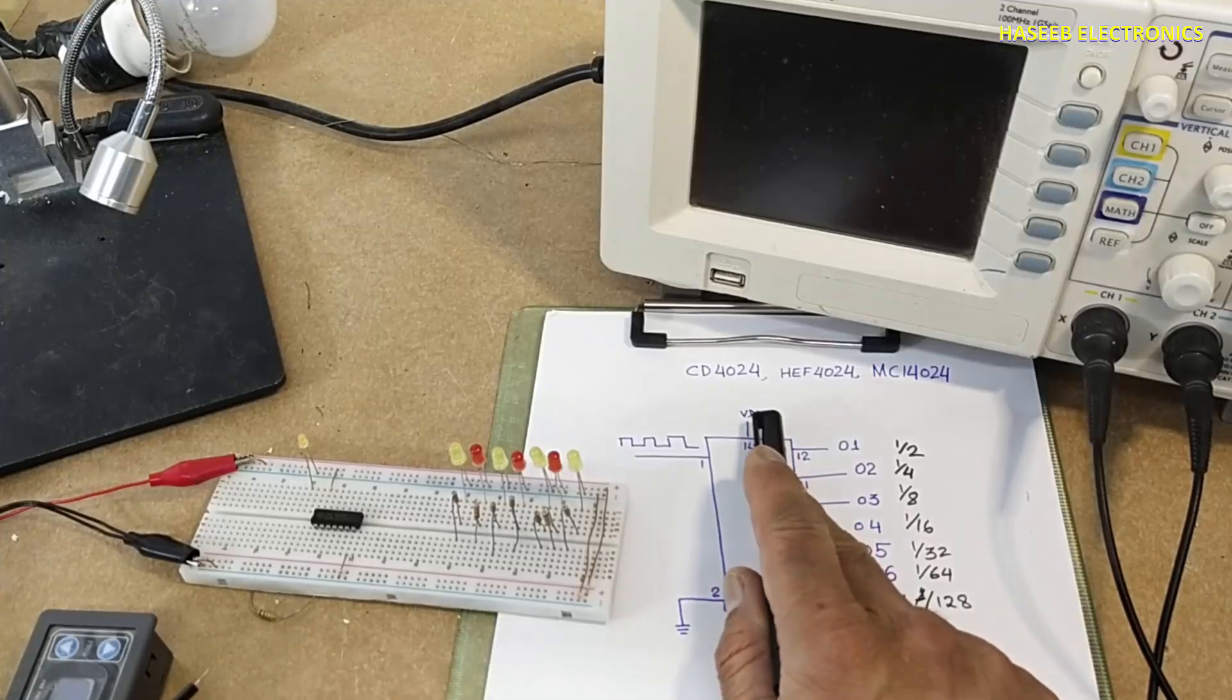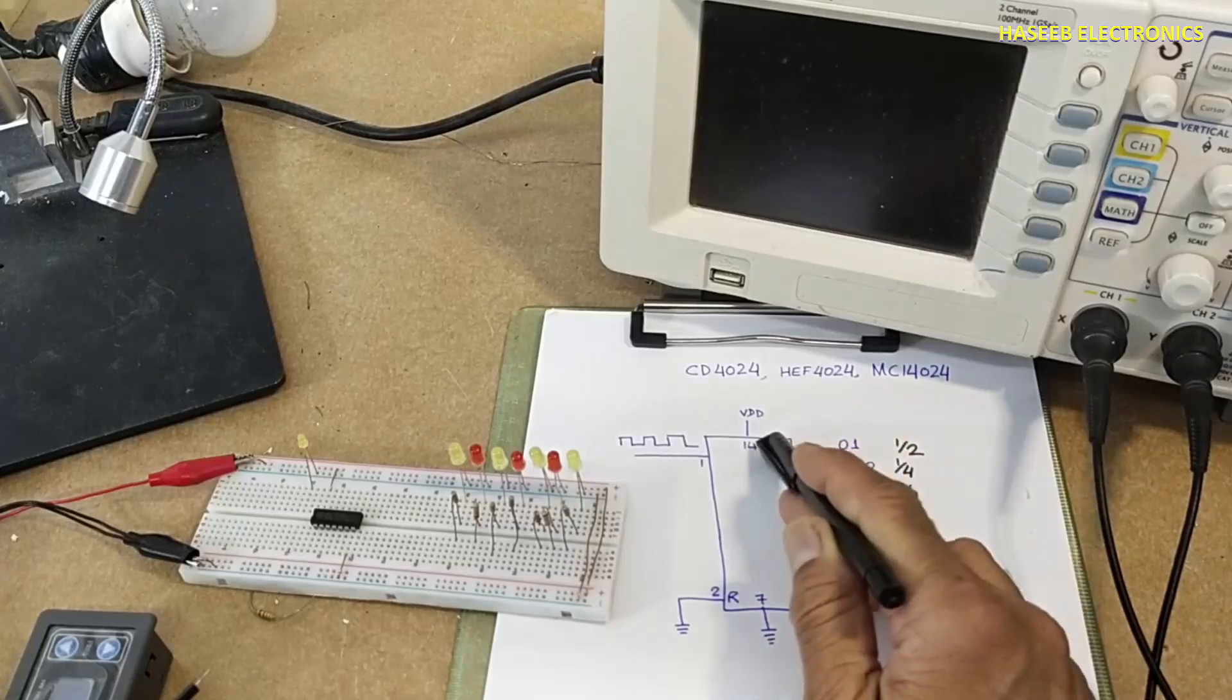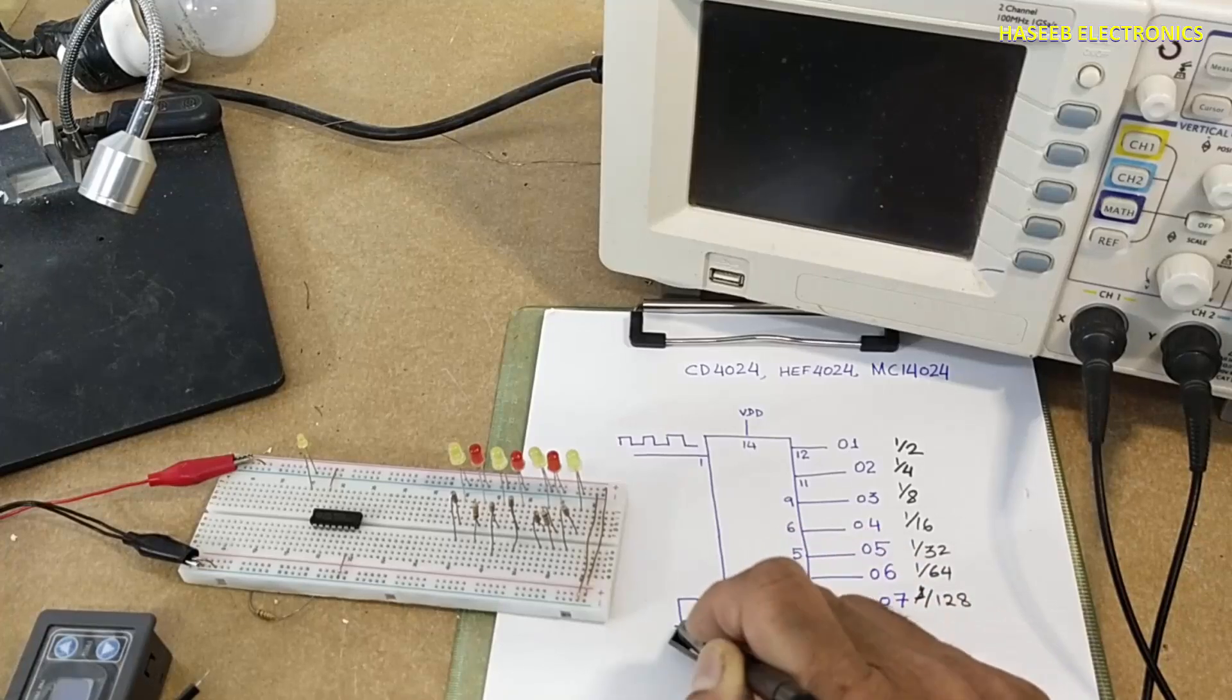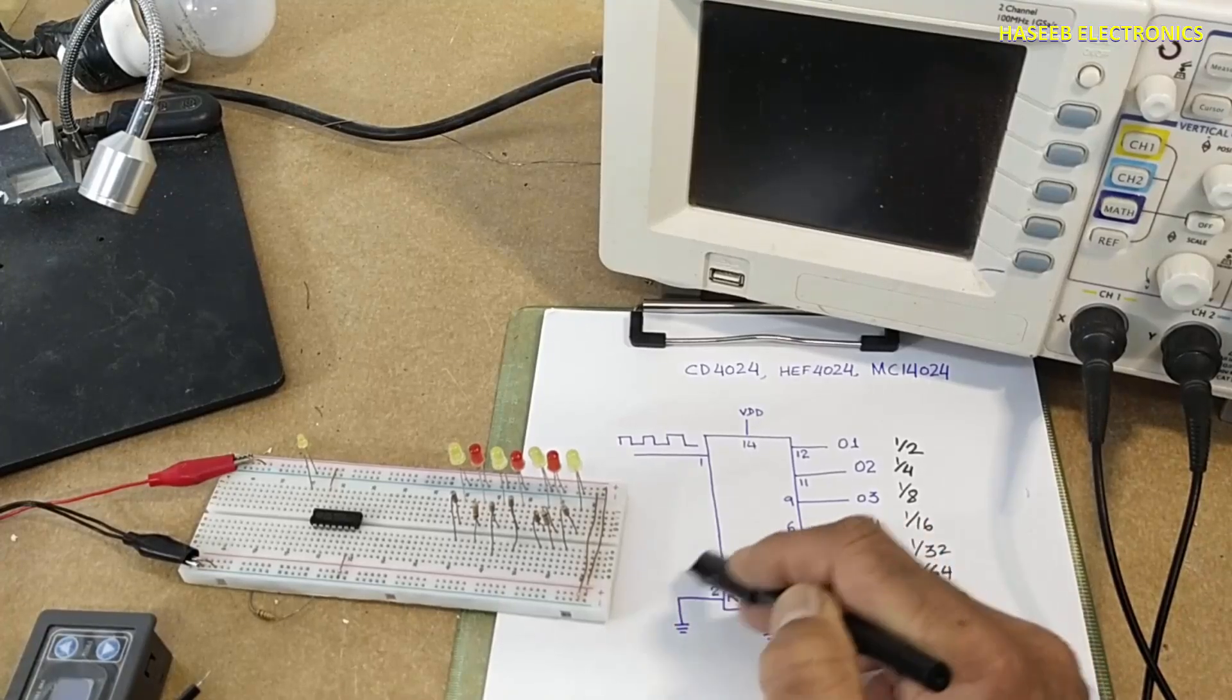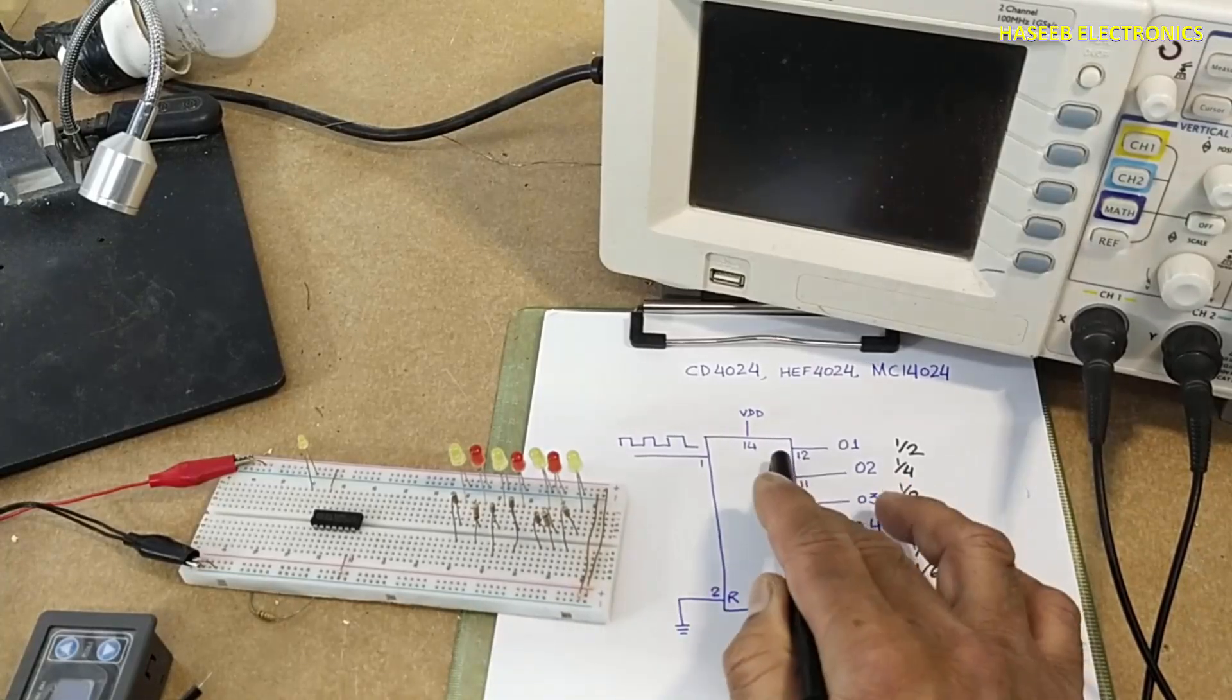3V to 15V can be provided as VDD at pin number 14. Pin 7 is ground. Pin 2 is reset pin. When the reset pin is connected to low side ground, this chip will start working.